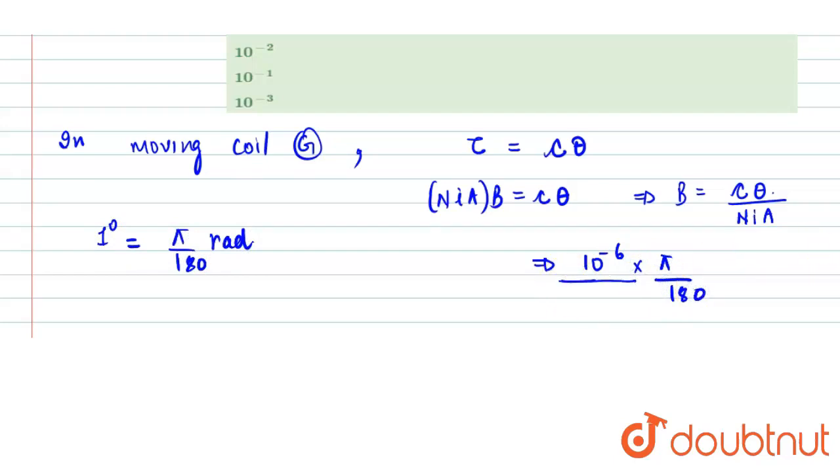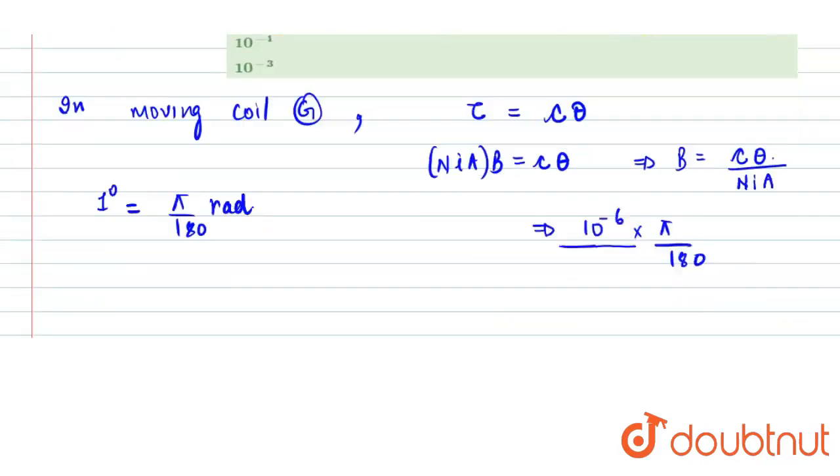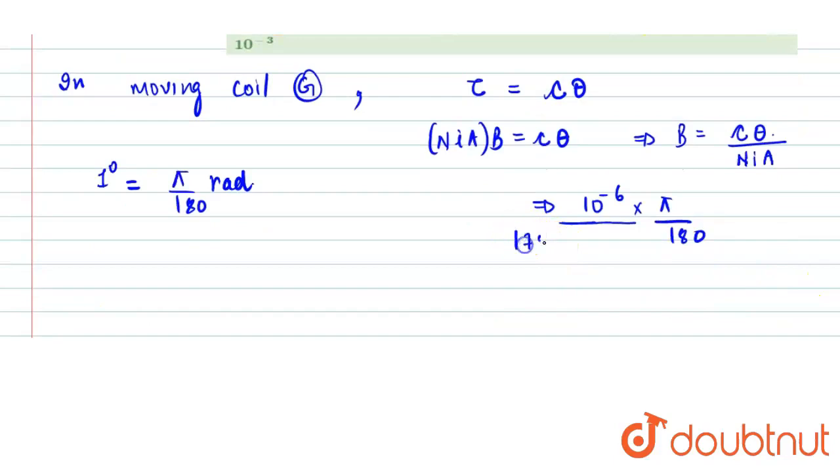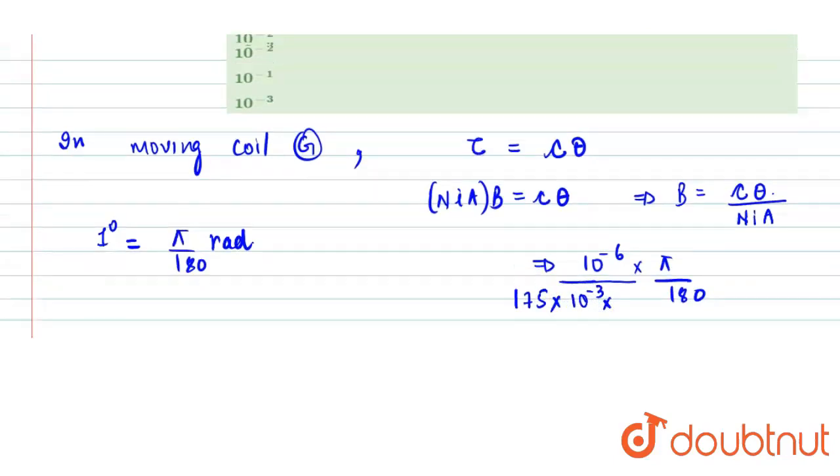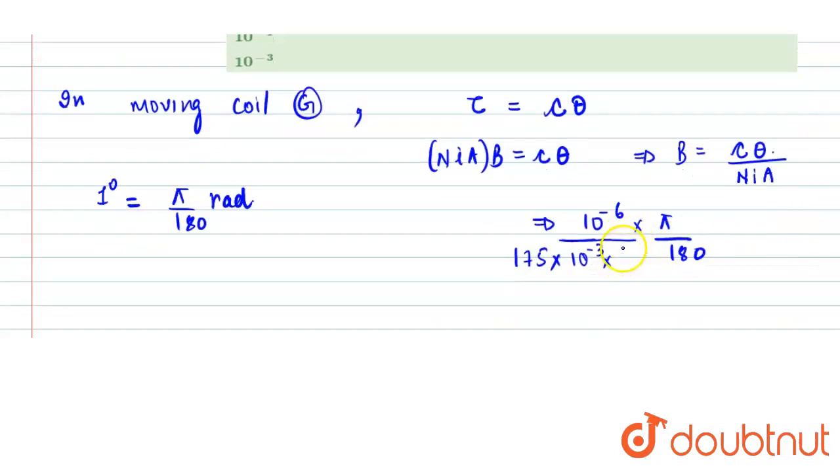Divided by N I A, where N is the number of turns, so number of turns are 175. Current is 1 milliampere, and area is 1 centimeter square, so it would become 10 to the power minus 4 in meter square. So this becomes pi divided by 175.